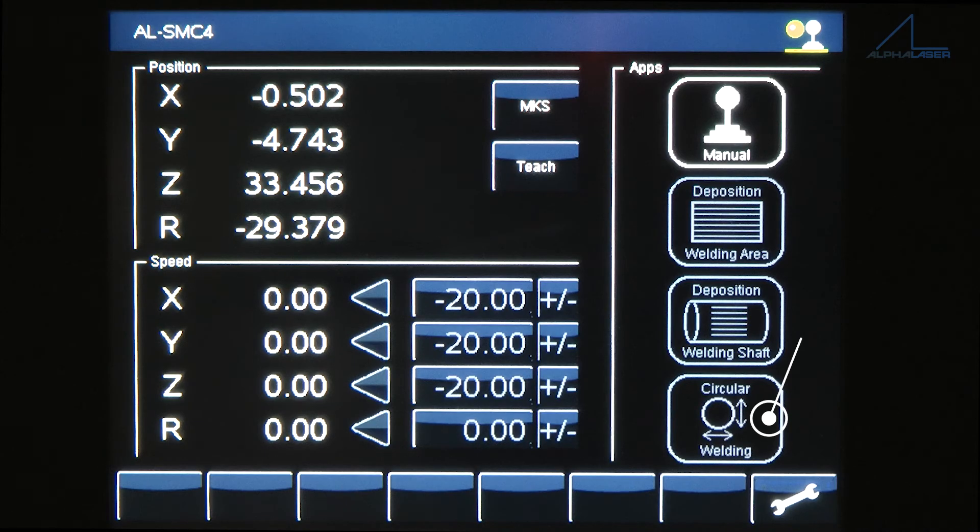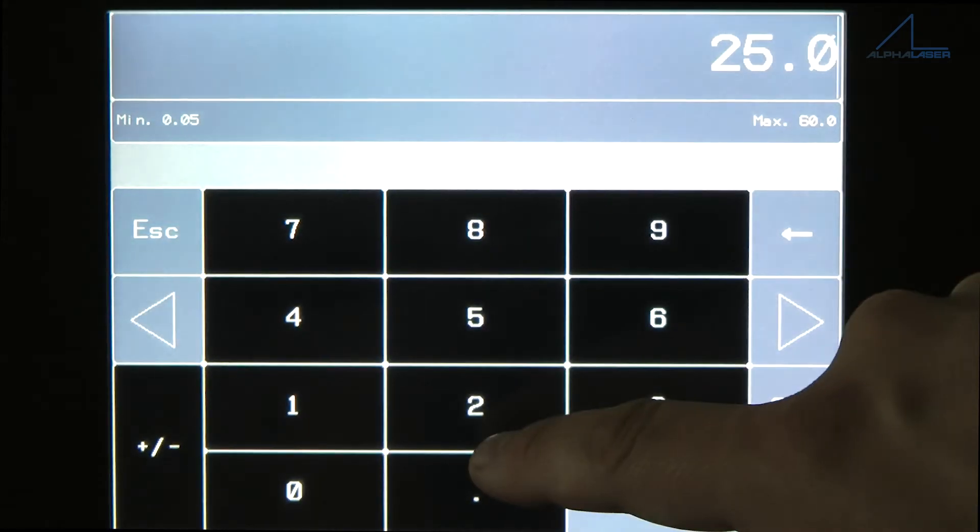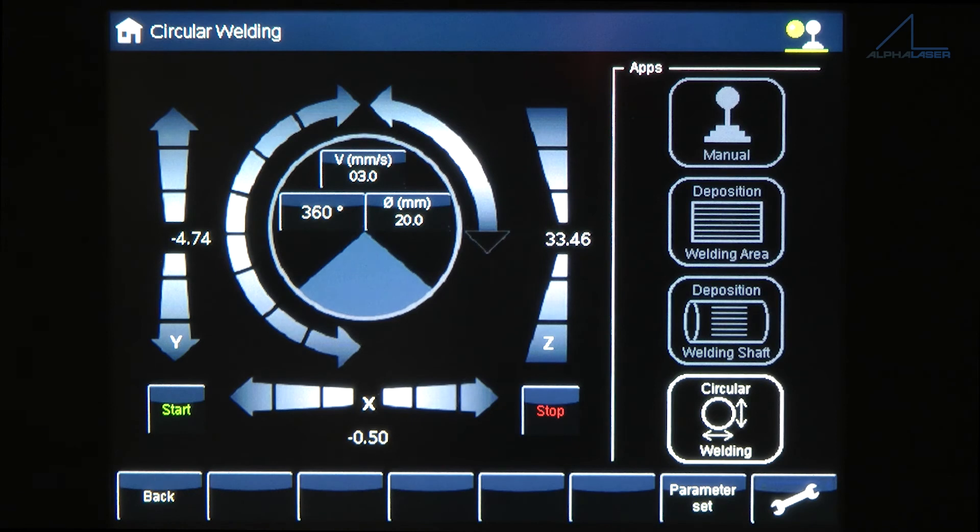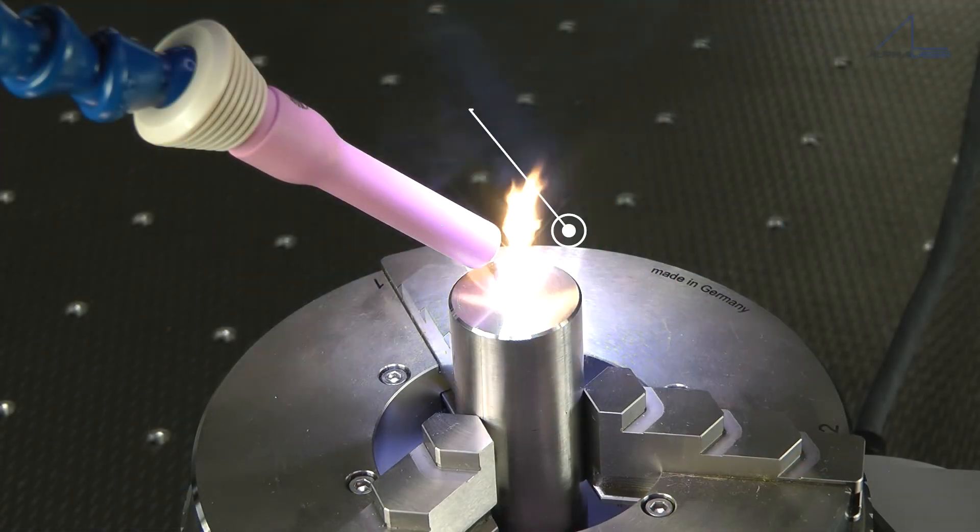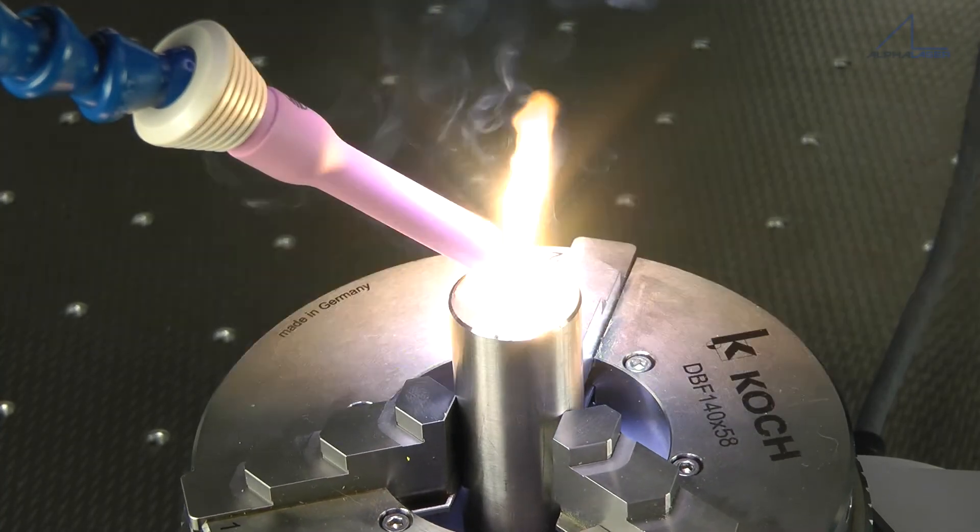Within the app for circular welding, the angle of rotation, the diameter of the component, and the speed of rotation can be set so that the laser system performs the welding automatically. This feature can be used, for example, to weld covers for sensors.